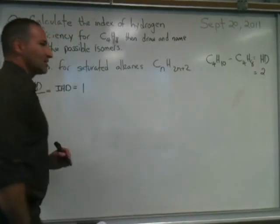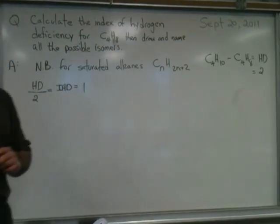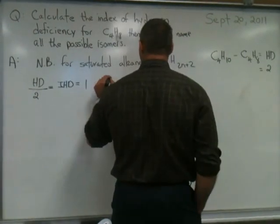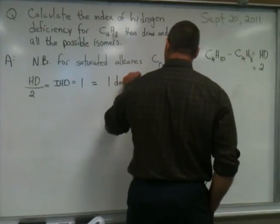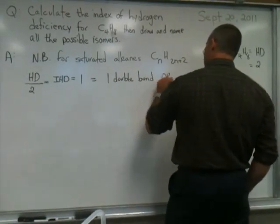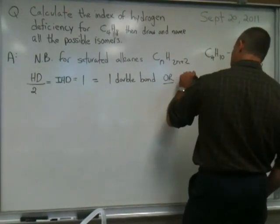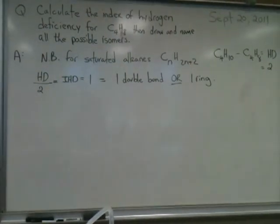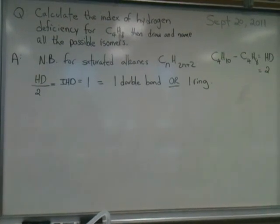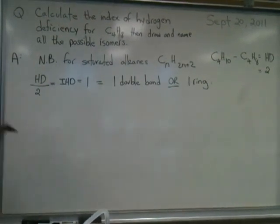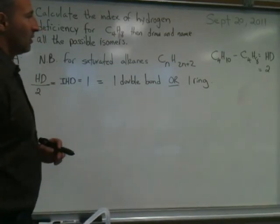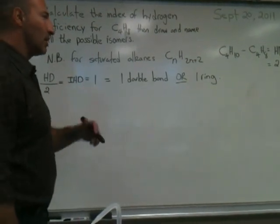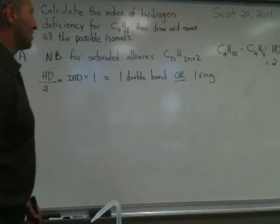What does an index of hydrogen deficiency of 1 signify? One double bond, or one ring. So our structure, to keep with the formula C4H8, must contain one double bond or one ring — not both at the same time, one or the other. That's why I underline OR. So let's do this systematically.